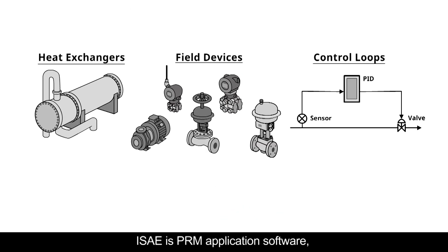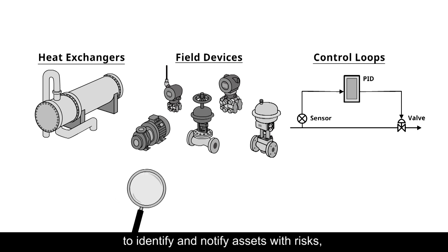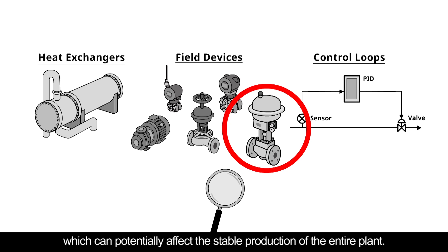ISAE is PRM application software which provides online advanced diagnostics of heat exchangers, field devices, control loops, and other field assets to identify and notify assets with risks, which could potentially affect the stable production of the entire plant.